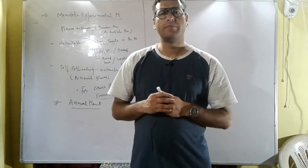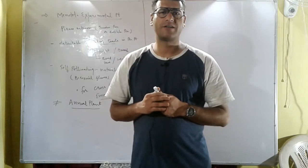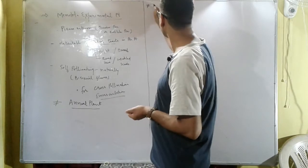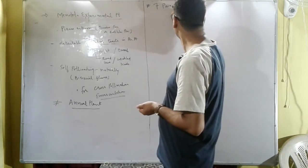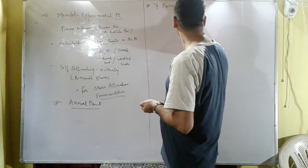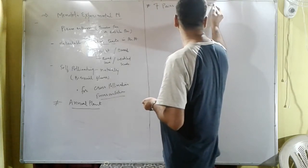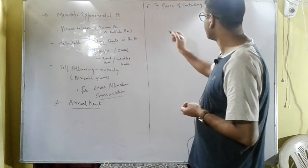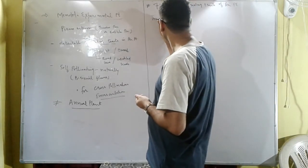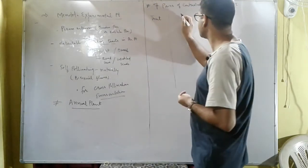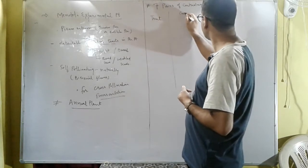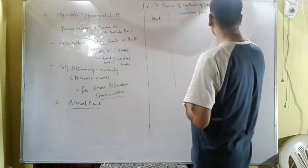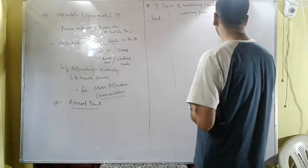Another important aspect is that Mendel selected seven pairs of contrasting traits of the pea plant for his hybridization experiments. Each trait has contrasting forms, and we can examine the dominant and recessive phenotypes as well as what appears in the F1 generation.